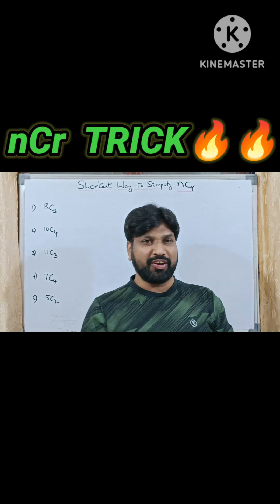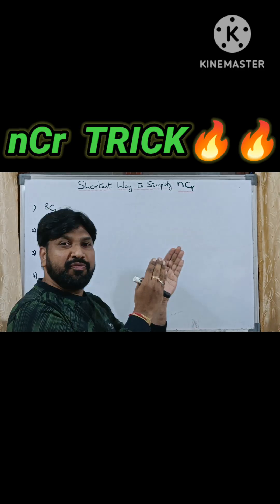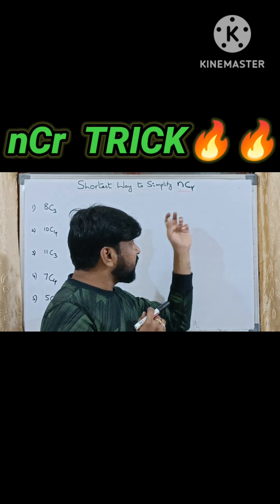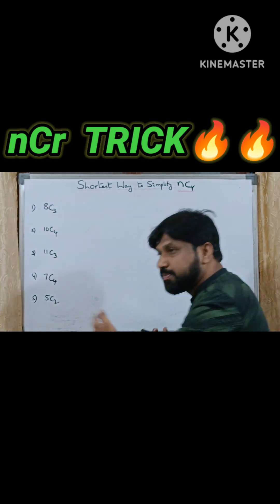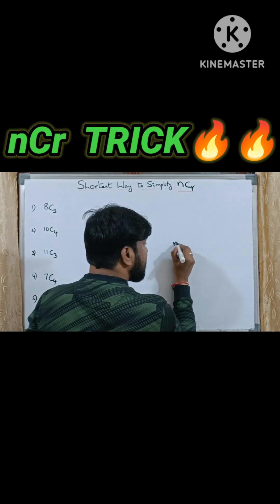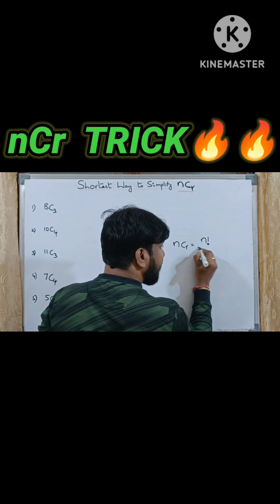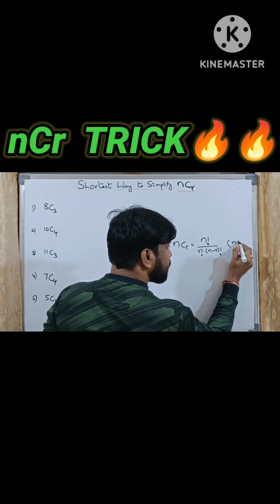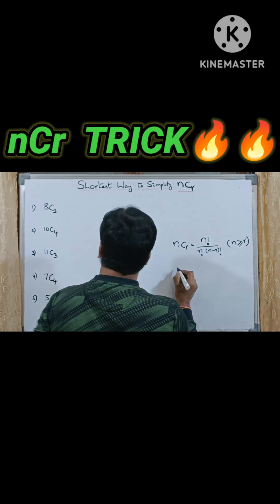Hi friends, today I am going to discuss the shortest way to simplify nCr. Without using the formula for nCr, we can be able to solve all these kinds of sums. The formula for nCr is equal to n factorial by r factorial into n minus r factorial, where n should be greater than or equal to r.